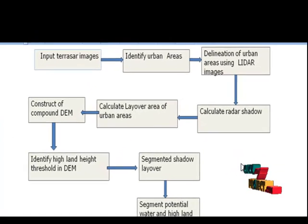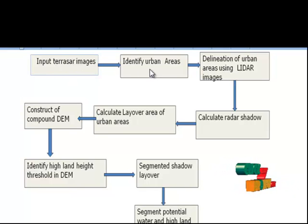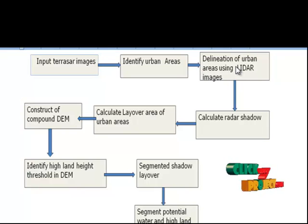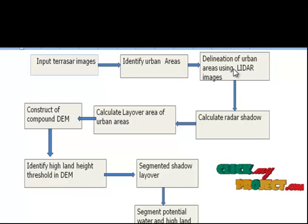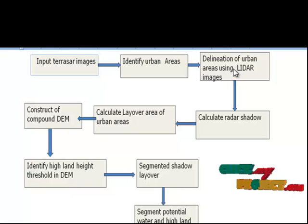Now let us see the data flow diagram. First, we load our input TerraSAR images. The next step is to identify urban areas within the TerraSAR images. Following that, delineation of urban areas is performed using LIDAR images. Currently this process is performed manually as it is a pre-processing operation that is not time critical.